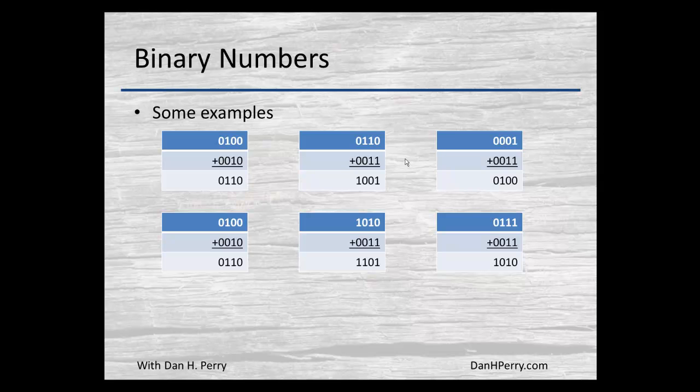Now in the next example we've got 1 plus a 1 1. So 1 plus 1 in the right most bit gives us a 0 with a carry.